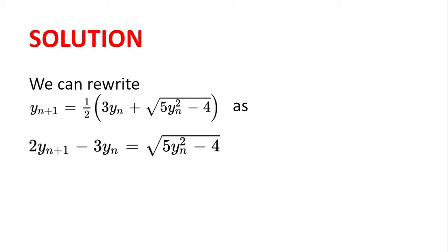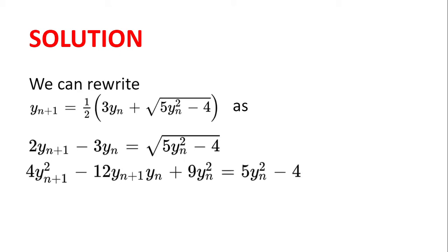Solution. We can rewrite yₙ₊₁ equal to half of 3yₙ plus the square root of 5yₙ squared minus 4. We first multiply by 2 and then take away 3yₙ from both sides to get 2yₙ₊₁ minus 3yₙ equal to the square root of 5yₙ squared minus 4. Now we square both sides to get rid of the square root and we get 4yₙ₊₁ squared minus 12yₙ₊₁yₙ plus 9yₙ squared equal to 5yₙ squared minus 4.